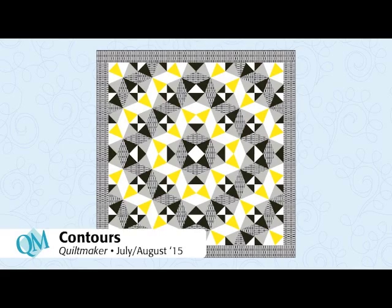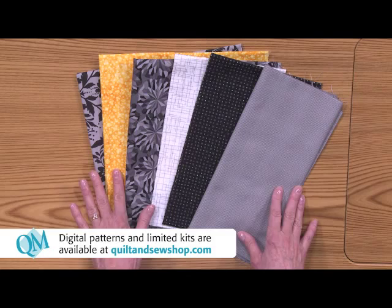The quilt is made using six different fabrics. We have three black prints, a gray print, white metallic, and a yellow tone-on-tone. And the quilt is sewn using foundations.